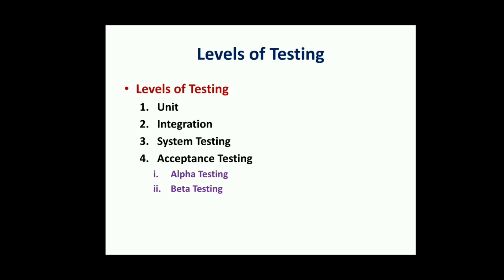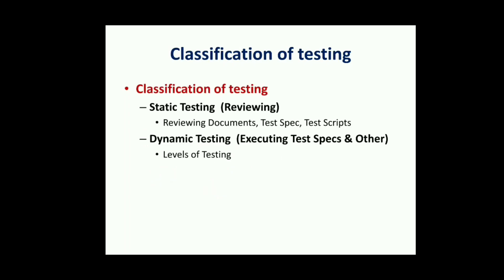In acceptance testing, we further classify into alpha testing and beta testing. Classification of testing is static testing and dynamic testing. Static testing involves reviewing documents like test packs, scripts, or requirement documents. Dynamic testing involves executing the software, and it is classified into the levels of testing — unit testing, integration testing, system testing, and acceptance testing all come under dynamic testing.